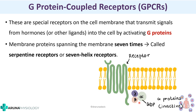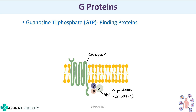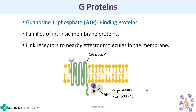These are membrane proteins spanning the membrane 7 times, and that is why they are also called serpentine receptors because they look like snakes. So they are called serpentine receptors or 7-helix receptors - that is another term for G-protein coupled receptors. The word G stands for guanosine triphosphate binding proteins or GTP binding proteins.